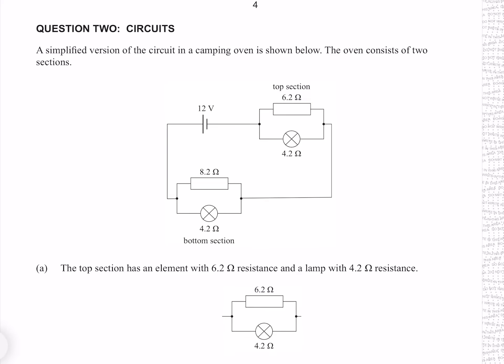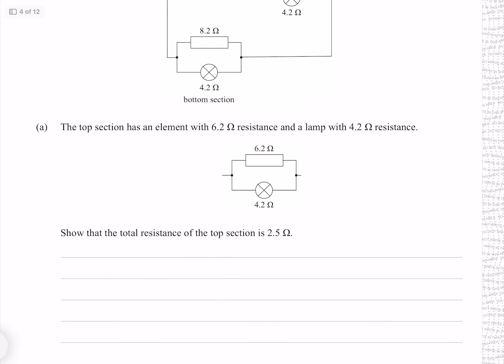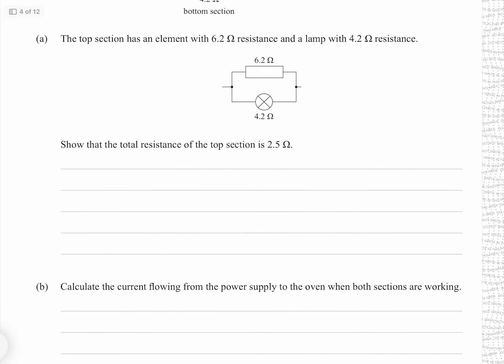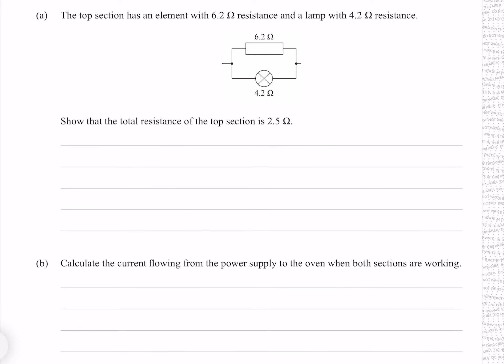Question 2: a simplified version of the circuit in a camping oven is shown. The oven consists of two sections; the top section has an element with 6.2 ohm resistance and a lamp with 4.2 ohm resistance. Show that the total resistance of the top section is 2.5 ohms. Because these two resistances are in parallel, we need to use the parallel resistance equation. Solving for R by taking the inverse of both sides gives 2.5038, or 2.5 ohms to two significant figures, which is what we're trying to show.